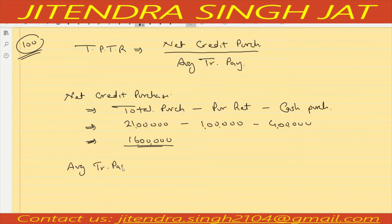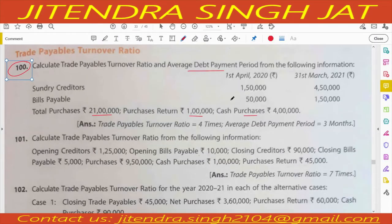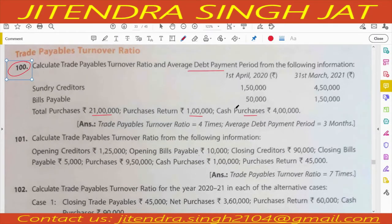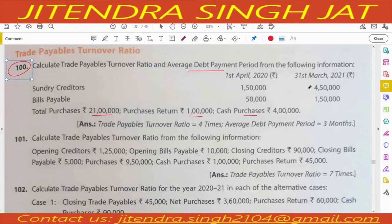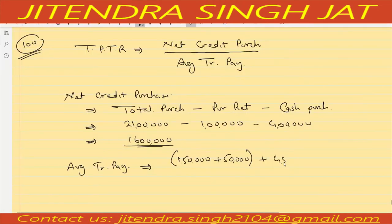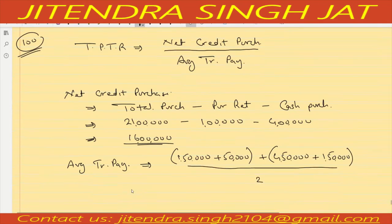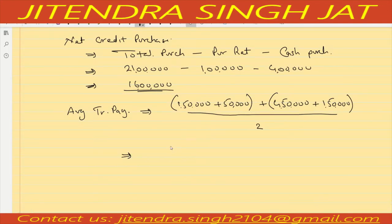Average trade payables means opening plus closing divided by 2. Opening trade payable: creditors 1 lakh 50 plus bills payable 50,000 equals 2 lakh. Closing trade payable: 4 lakh 50 plus 1 lakh 50,000 equals 6 lakh. So opening plus closing: 2 lakh plus 6 lakh equals 8 lakh divided by 2 equals 4 lakh average trade payable.